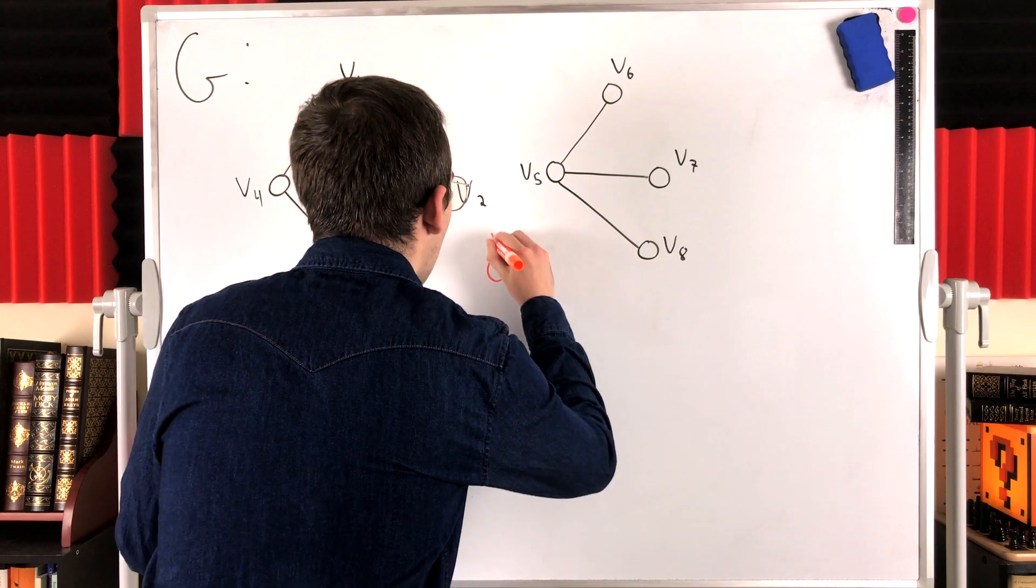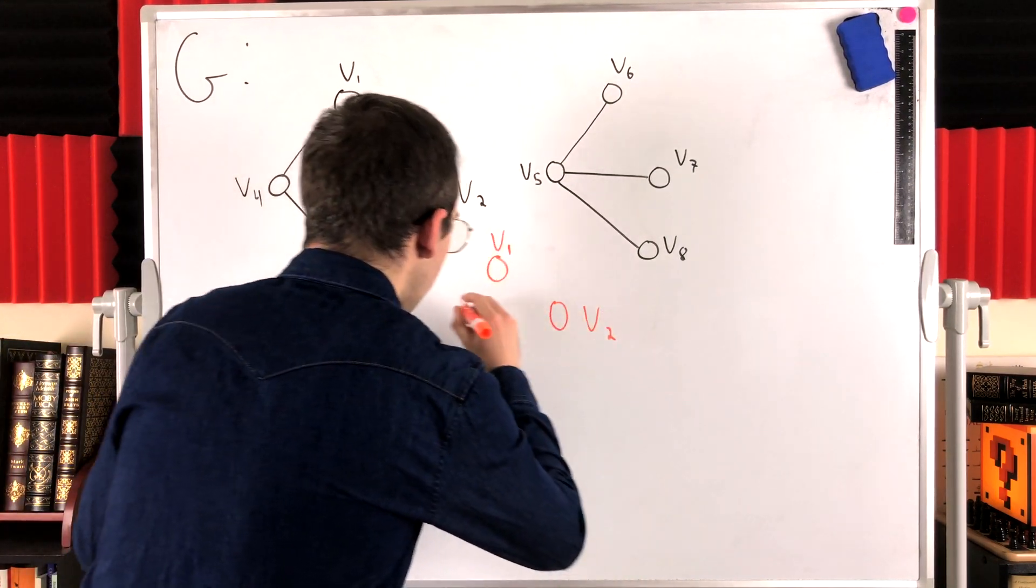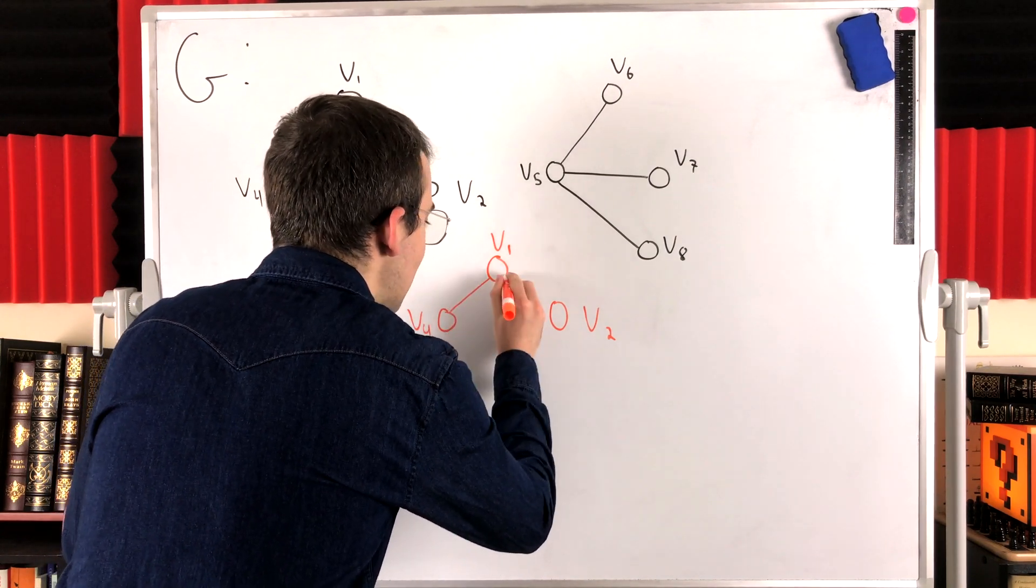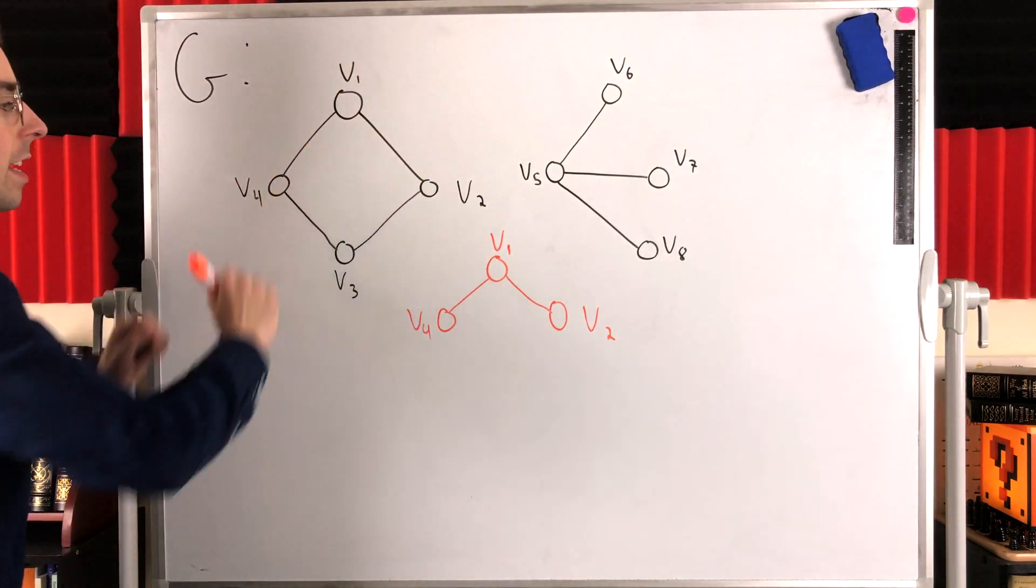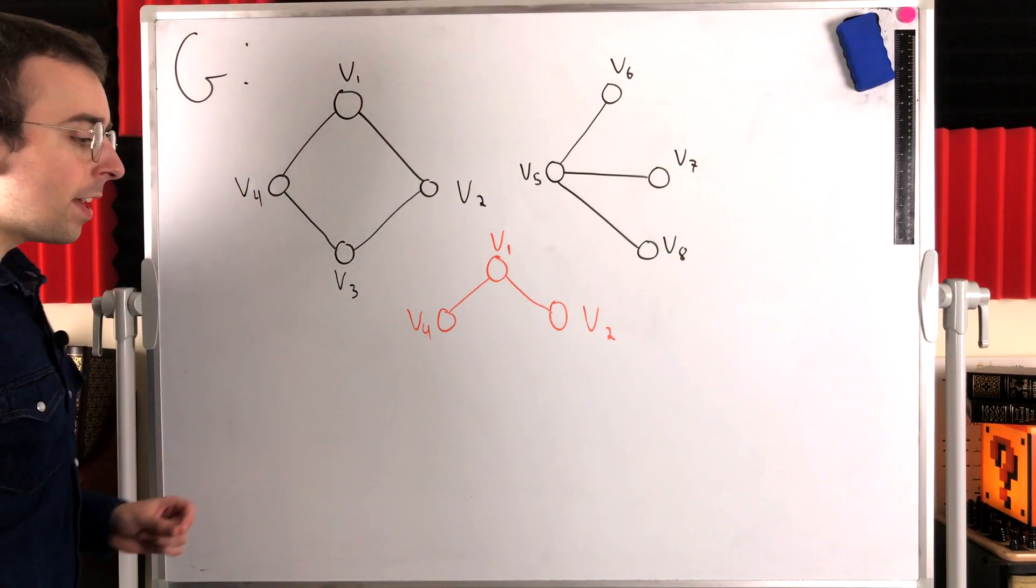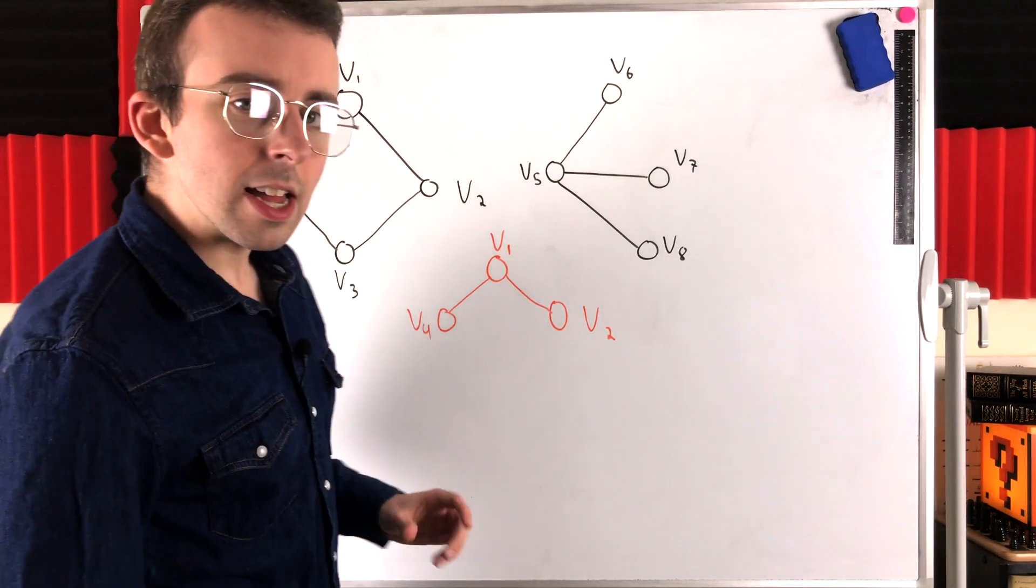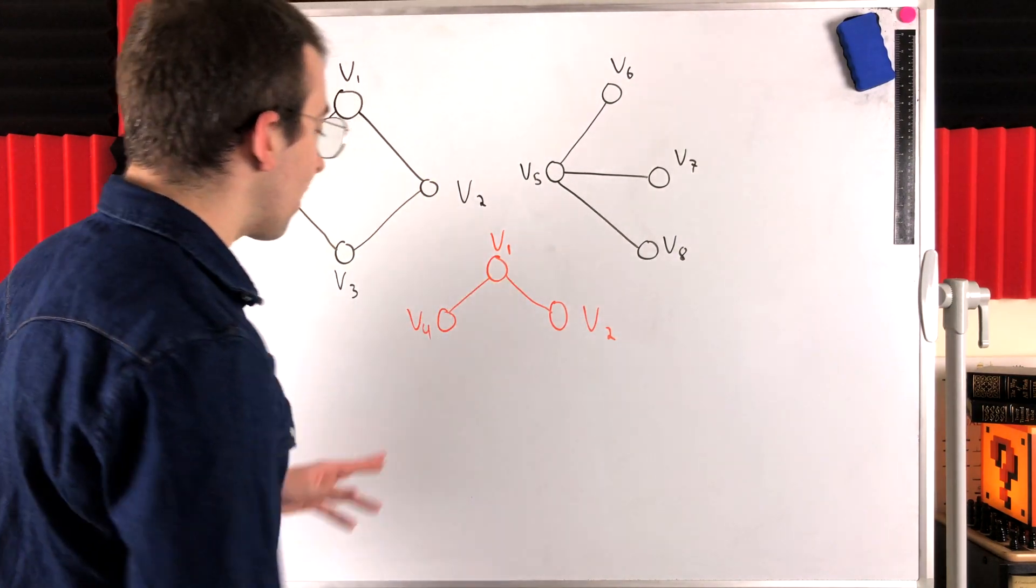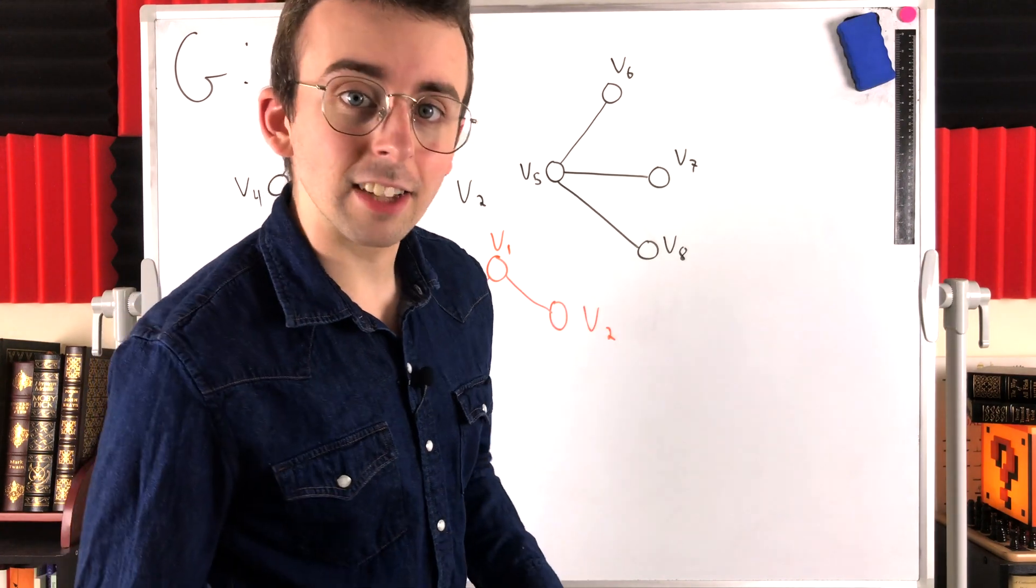Consider this connected subgraph of G that has the vertices V1, V2, and V4, and these edges. Is this, that's this part of G right here, is this a component of G? The answer is no. Although it is a connected subgraph of G, it's not a maximal connected subgraph of G, because it is a proper subgraph of some other connected subgraph of G.